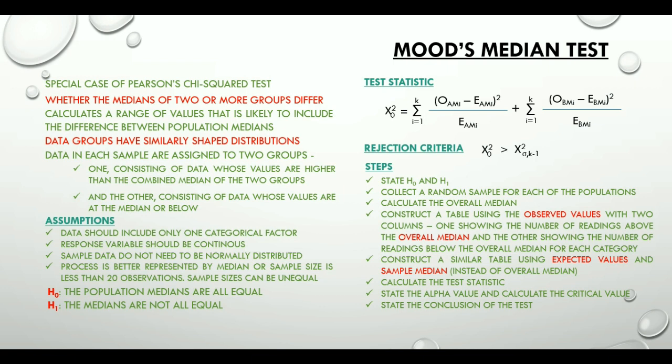After making these two tables we calculate the test statistic, state the alpha value and compute a critical value from the tables. Finally, we state the test conclusion.